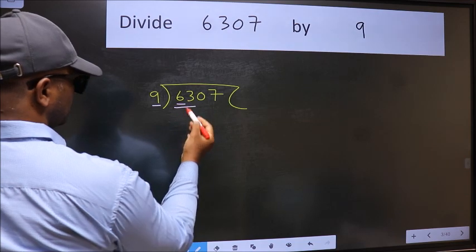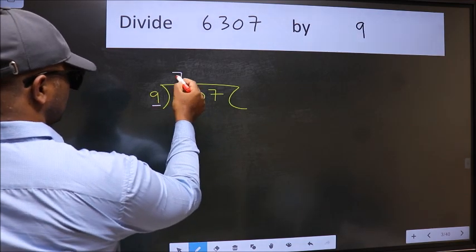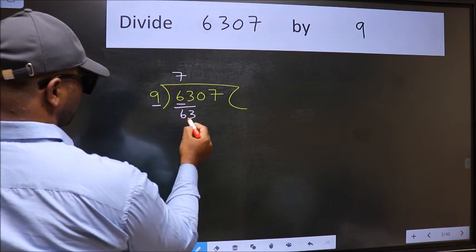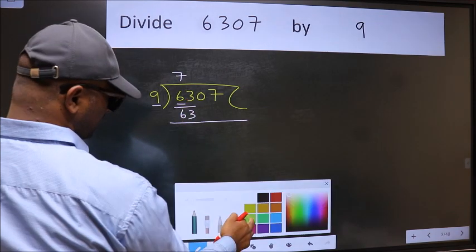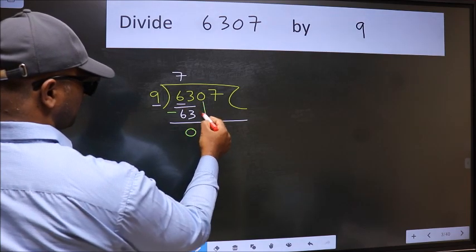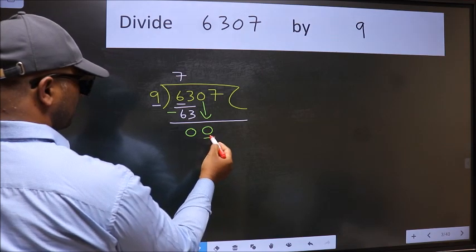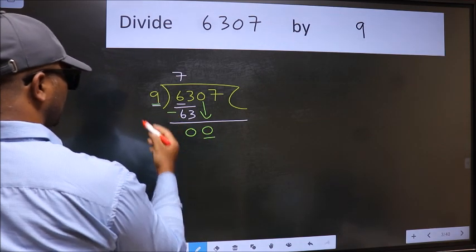Next, here we have 6 and here 9. 6 is smaller than 9, so we should take two numbers: 63. When do we get 63 in 9 table? 9 times 7 is 63. Now we should subtract. We get 0. After this, bring down the beside number, so 0 down.